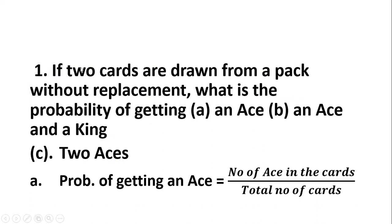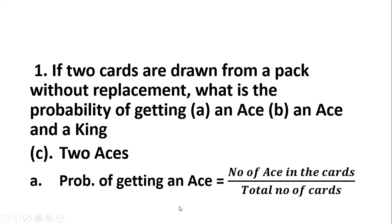If two cards are drawn from a pack without replacement, what is the probability of: getting an ace and a king, and getting two aces? First, the probability of getting an ace: the number of aces in the deck is four — one spade, one diamond, one heart, and one club. So that's 4 over 52, which simplifies to 1 over 13, giving 0.0769.